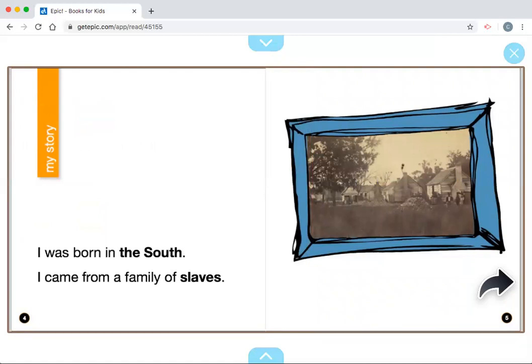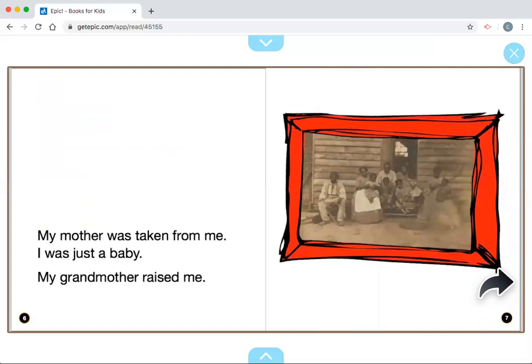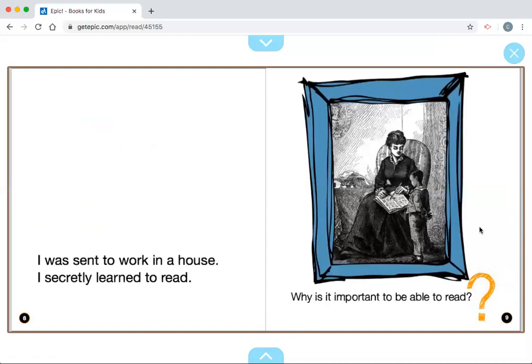I was born in the South. I came from a family of slaves. My mother was taken from me when I was just a baby. My grandmother raised me. I was sent to work in a house. I secretly learned to read.